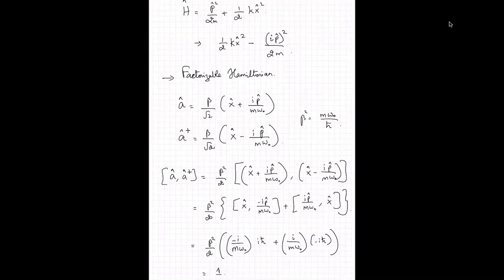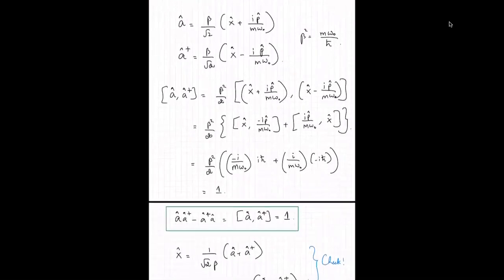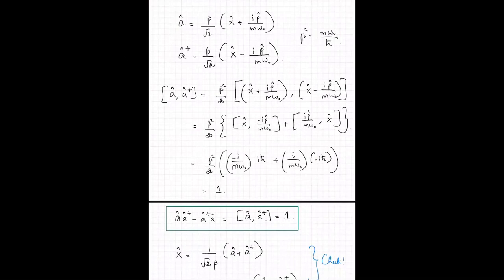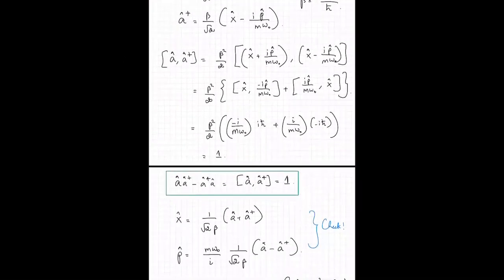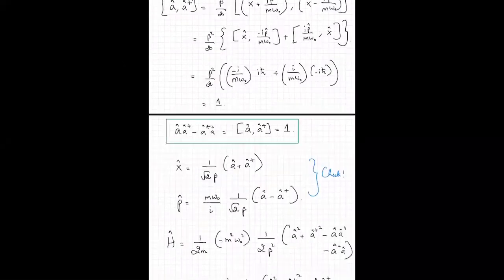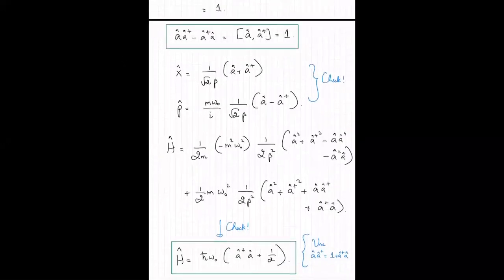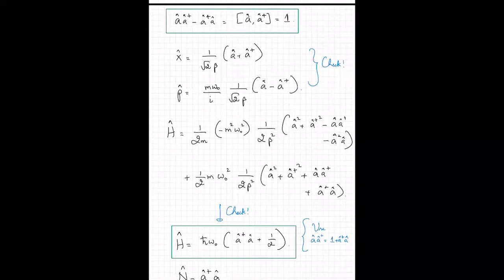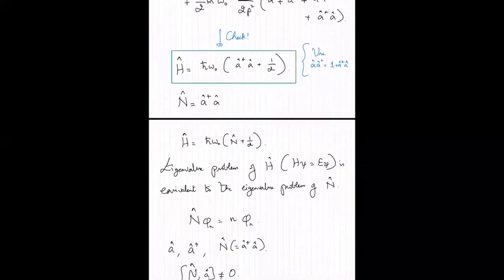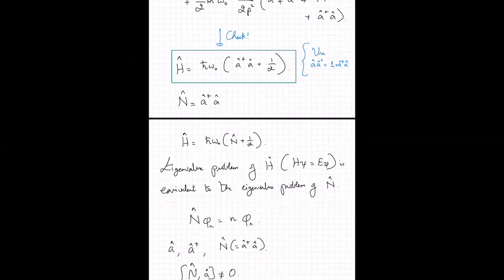We don't yet know what a and a† do, though we know what x and p do. We can blindly calculate the commutation relation between a and a†, assuming we know the commutation relation between x and p. We find that a and a† do not commute, since they are functions of x and p which do not commute. Also, a and a† are not Hermitian operators because the Hermitian conjugate of a is a†, which is a different operator.